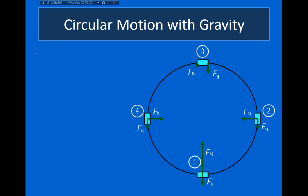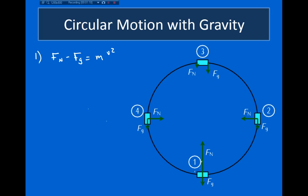Starting with the point at the bottom, I can see that the normal force is pointing inwards towards the center of the object's circular path, whereas the gravitational force is pointing away. The net force pointing inwards has to cause the centripetal acceleration, so its magnitude has to equal mv² divided by r. Since the normal force points inward and the gravitational force points away, the normal force minus the gravitational force equals mv²/r. I subtract the gravitational force because it is pointing away from the center of the circle.